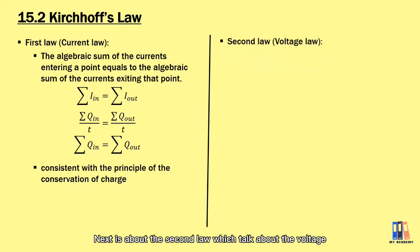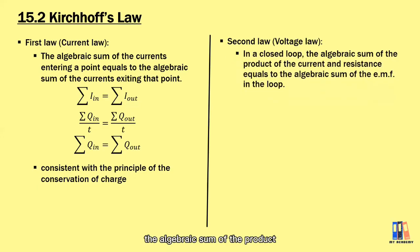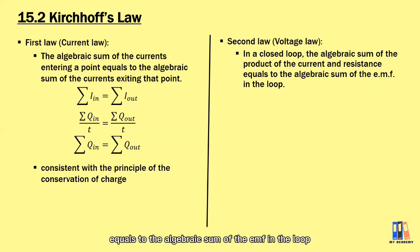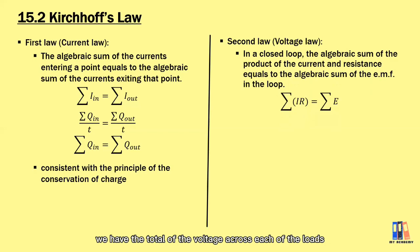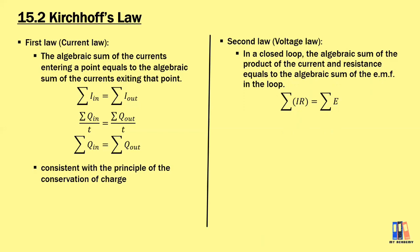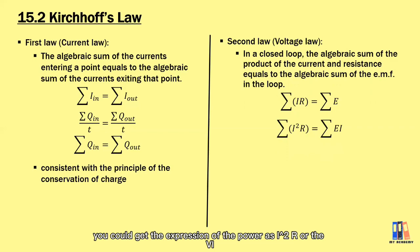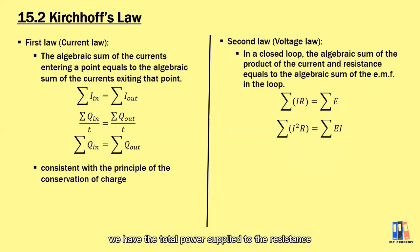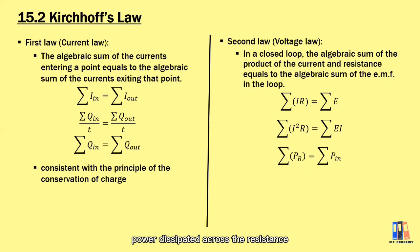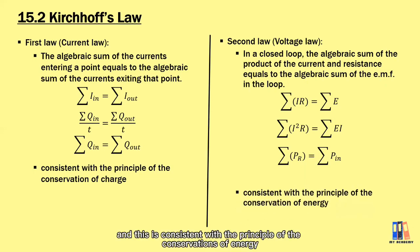The second law talks about voltage. It states that in a closed loop, the algebraic sum of the products of current and resistance — which refers to voltage — equals the algebraic sum of the EMF in the loop. So the total voltage across each load or resistance equals the total EMF in the circuit. Multiplying both sides by I gives power as I²R or VI, meaning total power dissipated across the resistance equals the power supplied by the EMF source, consistent with the principle of conservation of energy.